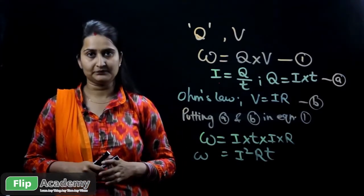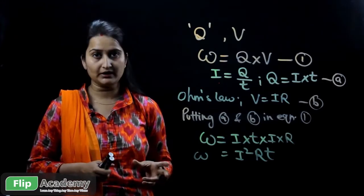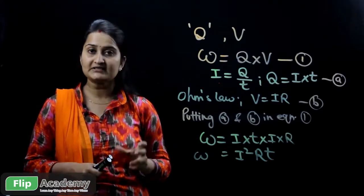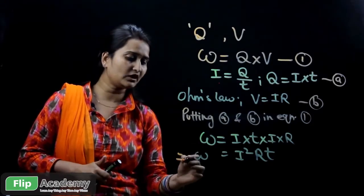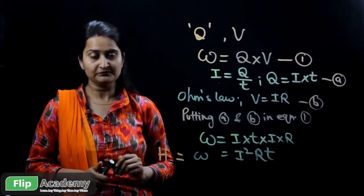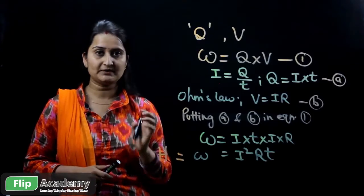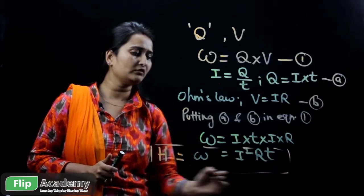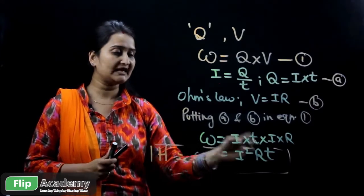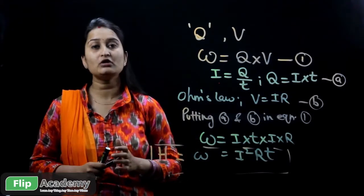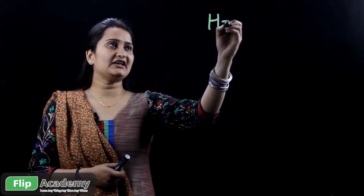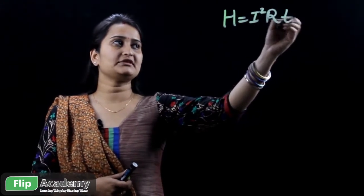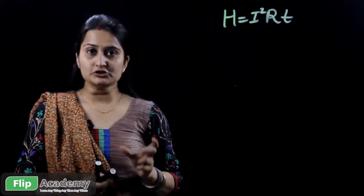This is the formula for work done. The amount of work done by the current to overcome the opposition of the resistance is equal to the amount of heat generated. So the formula for heat is H = I²RT. This formula is also called Joule's law of heating, which states that heat is generated in a conductor when current is passed through it, given the conductor has resistance R and the current flows for a time period T.